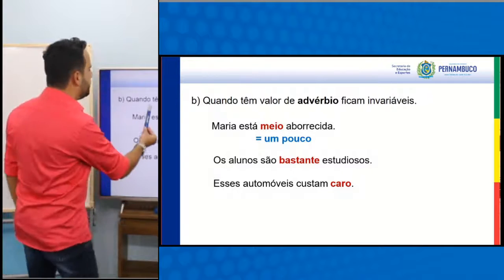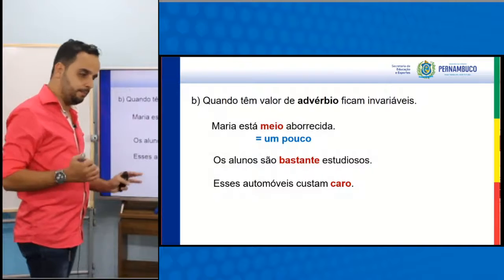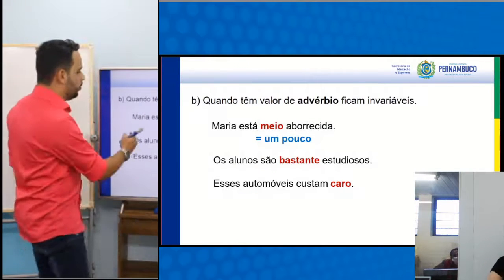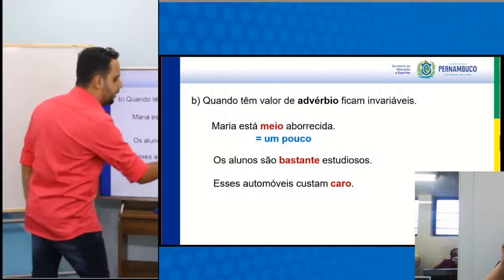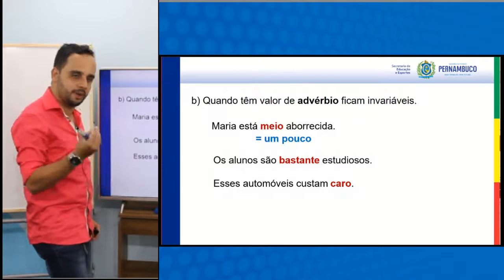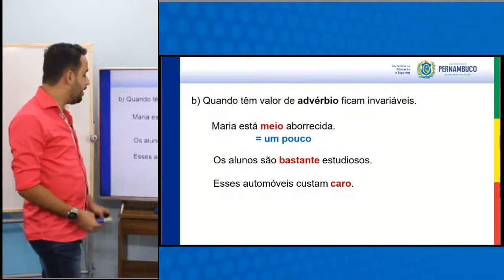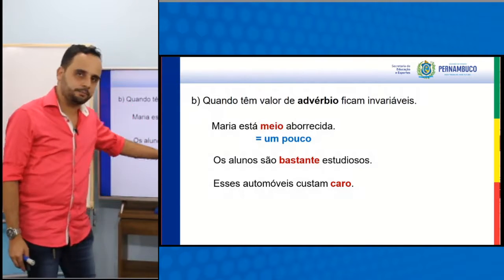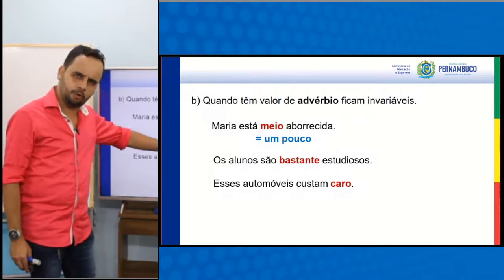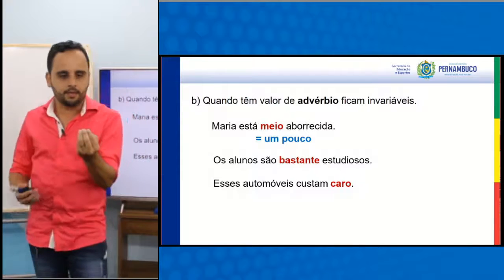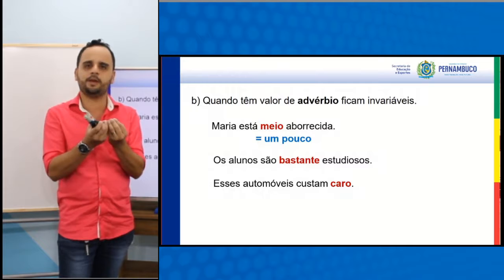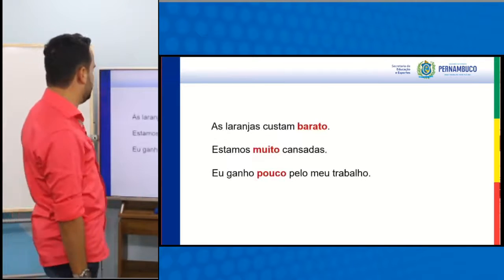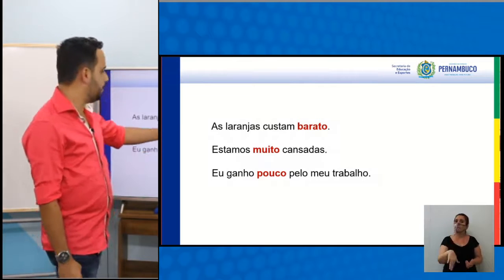Quando essas palavras tiverem valor de advérbio: Maria está meio aborrecida — ela tá um pouco, não tá nem tão arretada. Os alunos são bastante estudiosos — bastante aqui é um advérbio; eles são muito estudiosos, é uma intensidade. Esses automóveis custam caro — função adverbial. O advérbio é aquela classe gramatical invariável que vai atribuir circunstâncias, sempre trabalhando em parceria com o verbo, com o adjetivo e com outro advérbio.